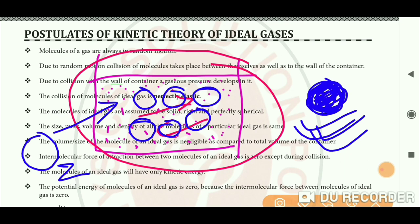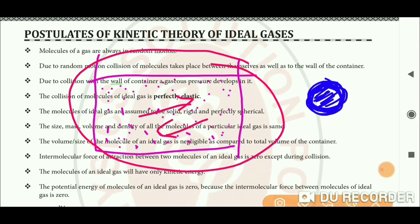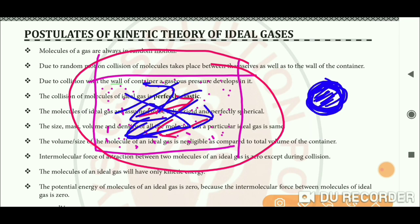Two things: an ideal gas molecule which is spherical and solid. A particular gas has one volume, one density, one mass — but different gases are different. Gas molecules are in random motion, which is random motion without any fixed direction.